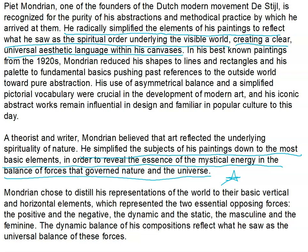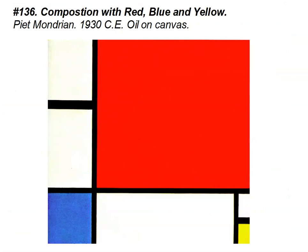Mondrian radically simplified the elements of his paintings to reflect what he saw as the spiritual order underlying the visible world, creating a clear, universal aesthetic language with his canvases. You're going to look at his work and say, what the heck? It's black lines and boxes in basic colors — primary colors: red, blue, and yellow — with simplified lines.